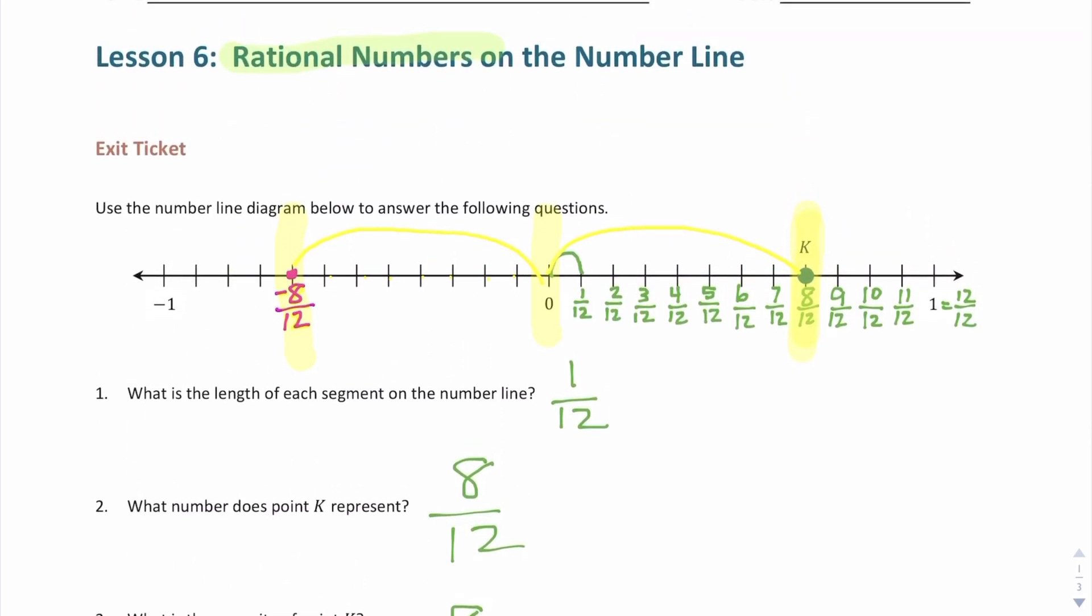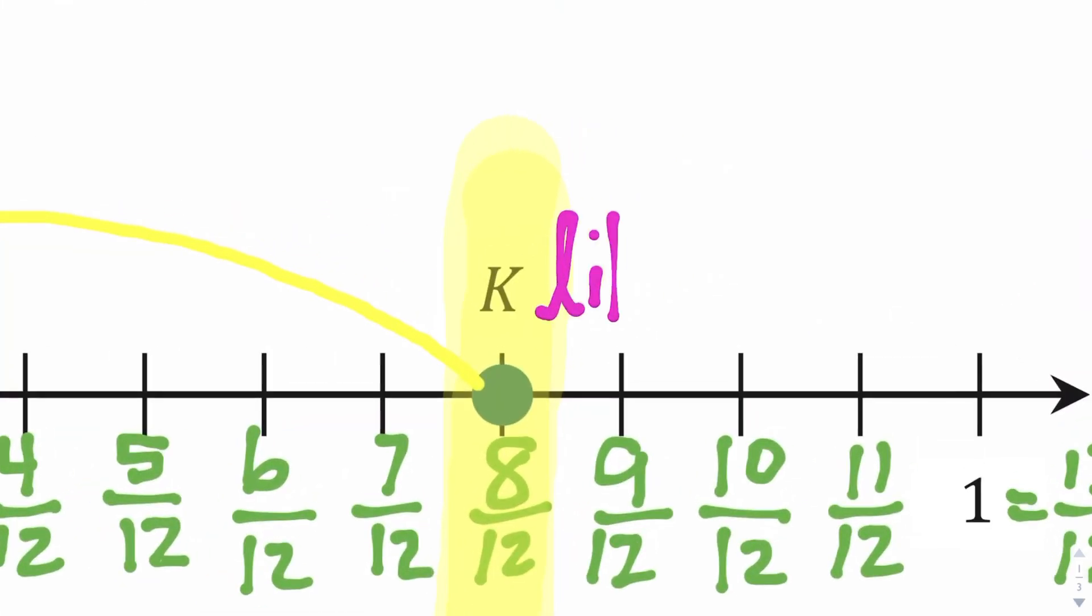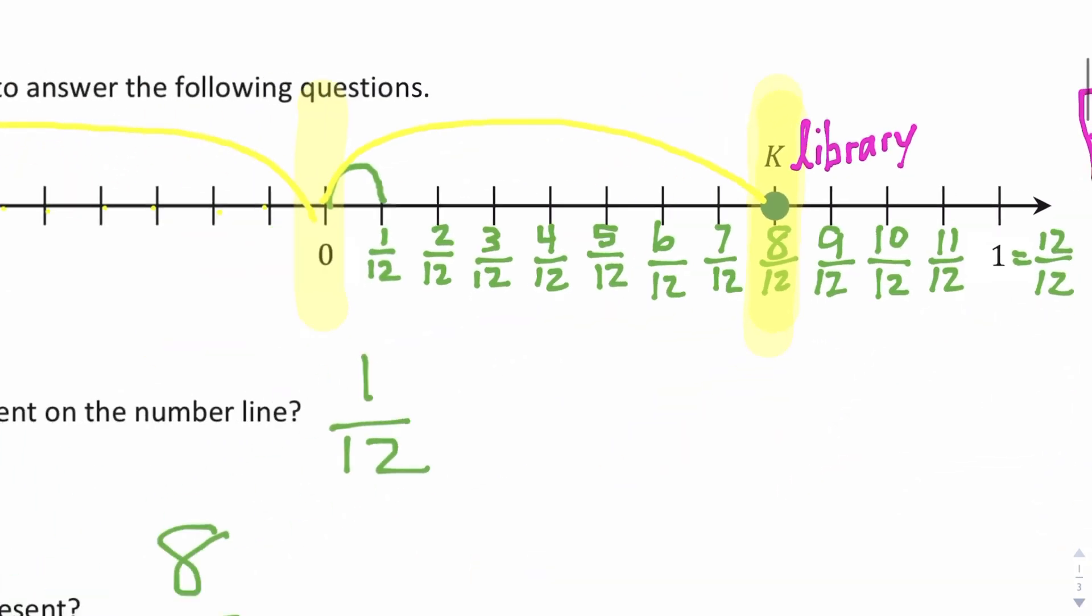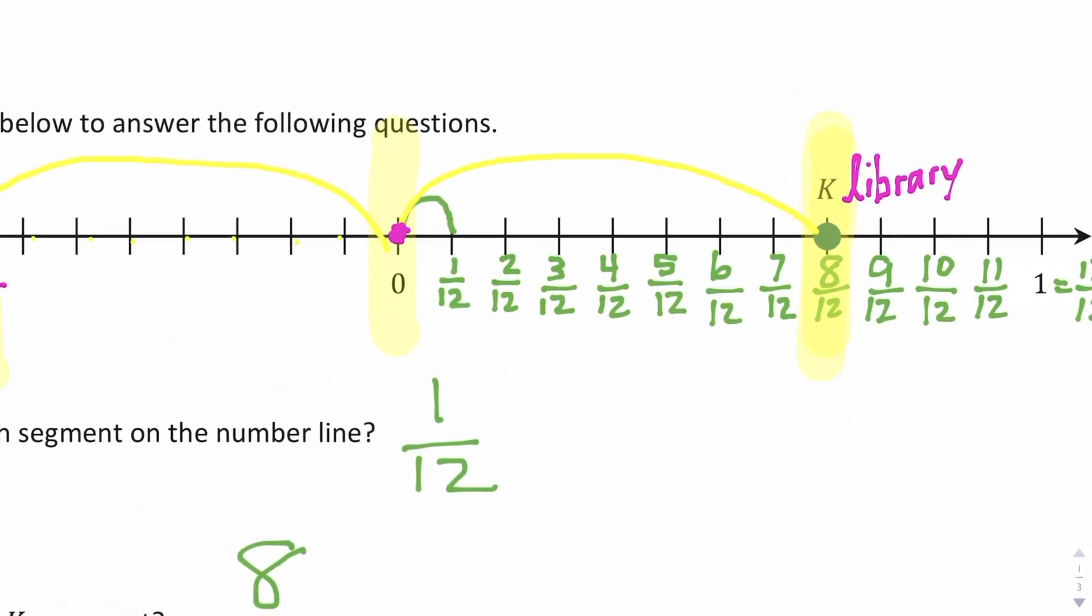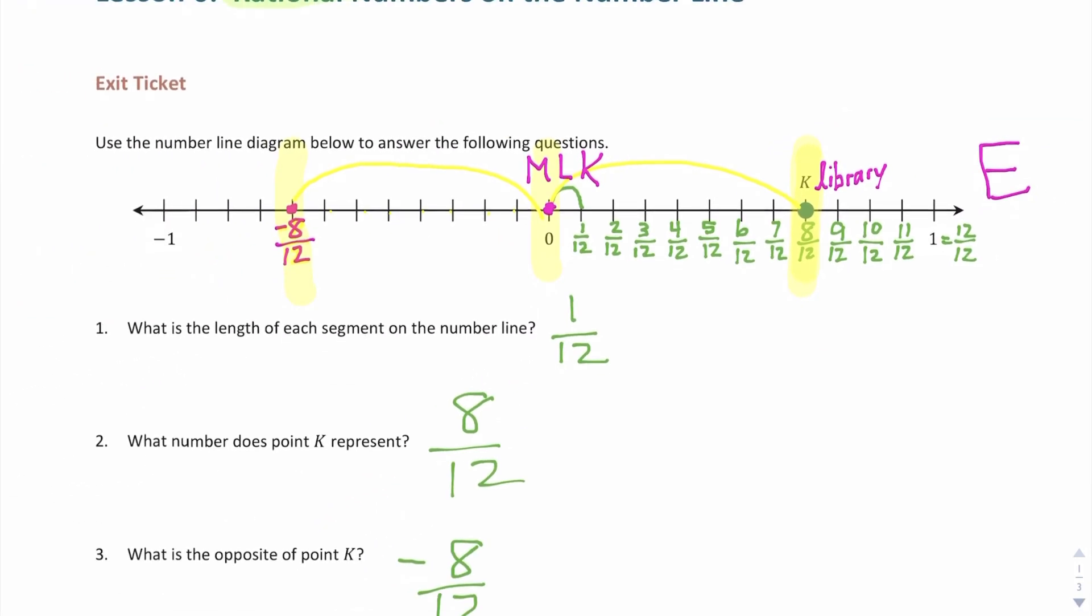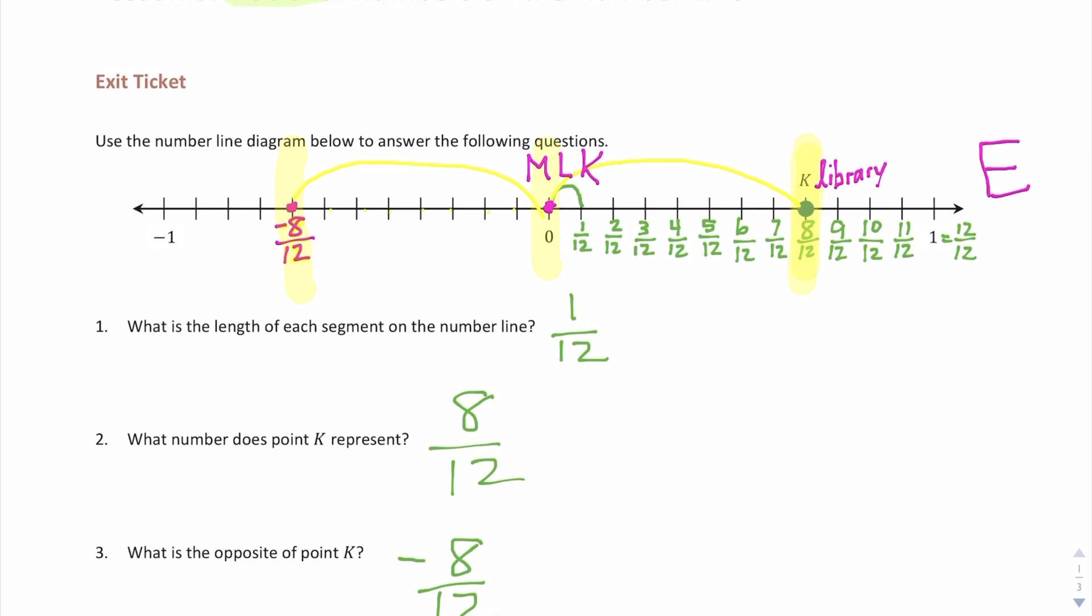So one thing I'm going to do is I noticed they mentioned east and west. So I'm going to go ahead and label. They say that point K represents the library, which is to the east of the school. So east is in the direction of the library, which is point K. They say that point zero represents the school. I'm going to go ahead and give it the initials MLK, which stands for Martin Luther King. And they want me to identify point L. I forgot to label it as an L earlier. They want me to create a story that represents what L could be in relation to the school and the library.